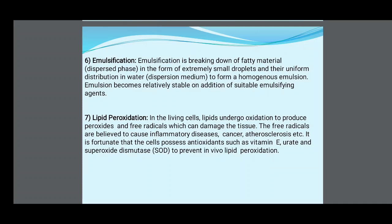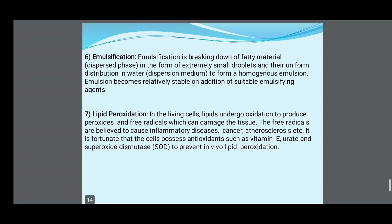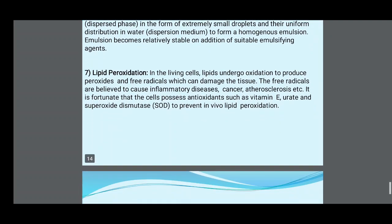Lipid Peroxidation: In living cells, lipids undergo oxidation to produce peroxides and free radicals which can damage tissue. Free radicals are believed to cause inflammatory diseases, cancer, and atherosclerosis. Fortunately, cells possess antioxidants such as vitamin E, urate, and superoxide dismutase to prevent in vivo lipid peroxidation.